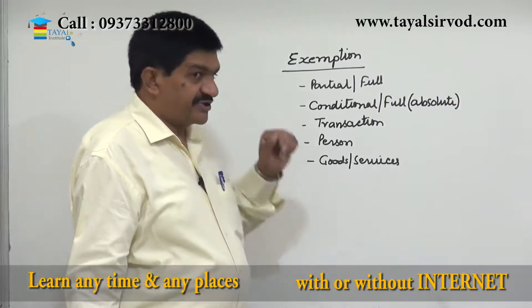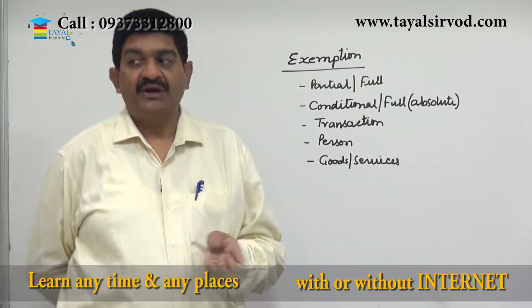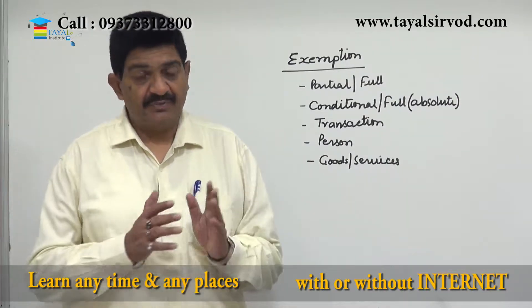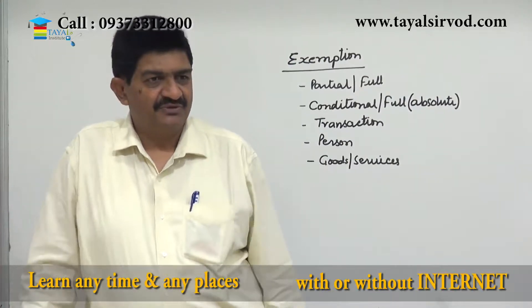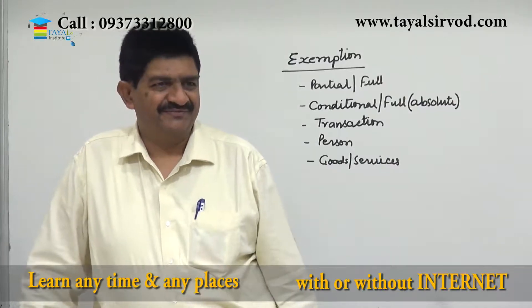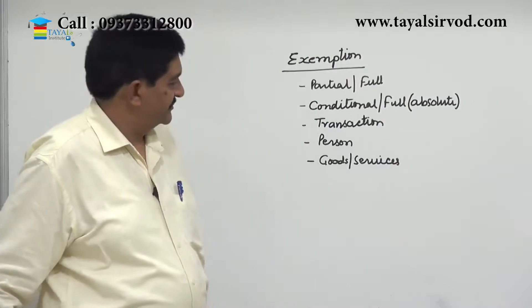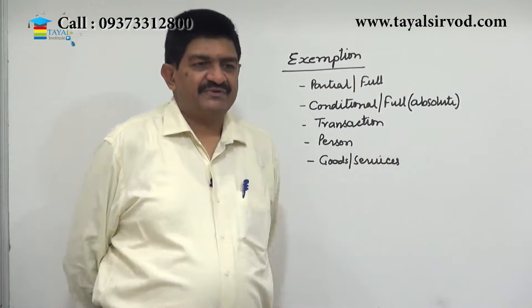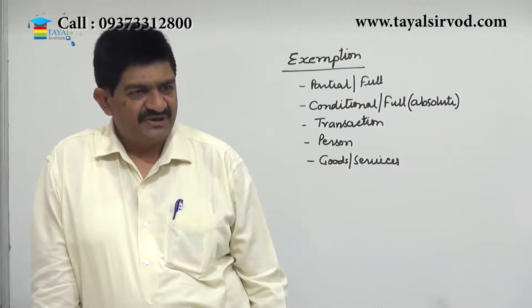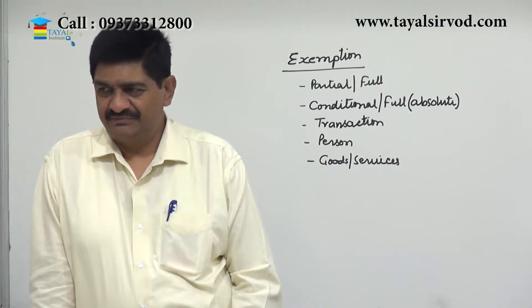When a person is exempt, they don't have to pay, but another person doing the same transaction is liable to pay. The best example is the threshold limit - a person not having annual turnover of 20 lakhs is exempt, while a person having turnover of 20 plus lakhs is liable. So in that case, the person is exempt - neither goods nor services nor the transaction is exempt, but the person is exempt. When goods or services are exempt, a person dealing in different types of goods may find some goods exempt and some taxable. So exemption carries different meaning at different places.